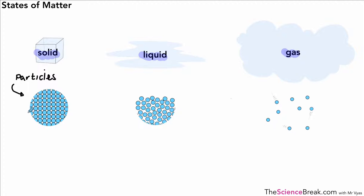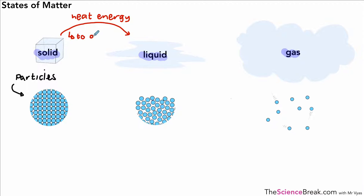You've probably gone through this quite a few times in your science lessons. We can go from solid to liquid, and the way we do that is by supplying heat energy. That heat energy is needed to overcome the forces of attraction between the particles.